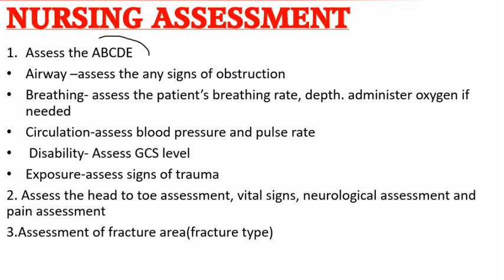Nursing Assessment. First, assess A, B, C, D, and E. A: Airway — assess for any signs of obstruction. B: Breathing — assess the rate, depth of breathing and administer oxygen if needed. C: Circulation — assess blood pressure and pulse rate. D: Disability — assess the GCS level (Glasgow Coma Scale). E: Exposure — assess the signs of trauma.